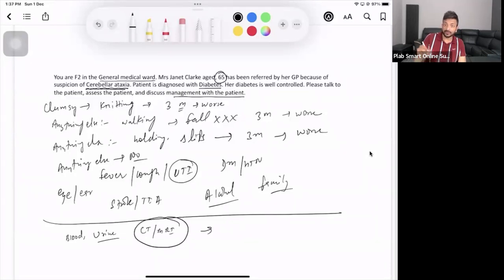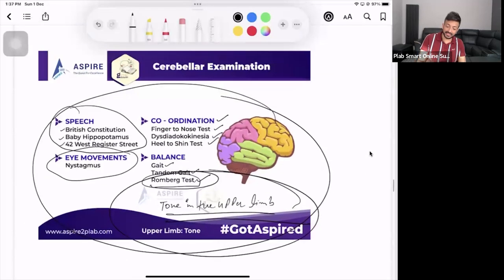But the thing is, you've been having these symptoms for the last couple of months. The examination I've done, I couldn't find any abnormality. But then you have the symptoms for a very long time. So, you have to do a scan to find out what exactly is happening with you. So, that is something that you can do as a part of management in the station of cerebellar ataxia.